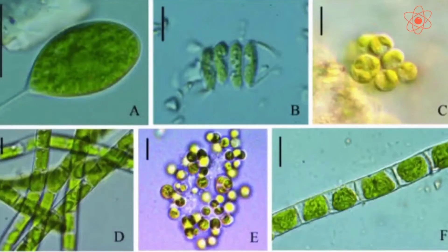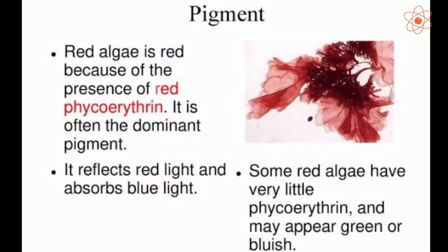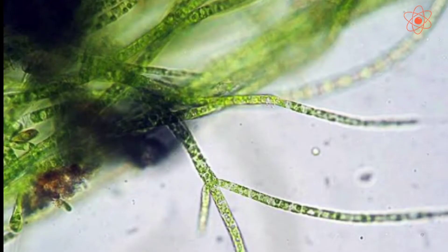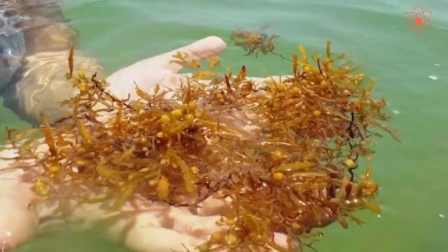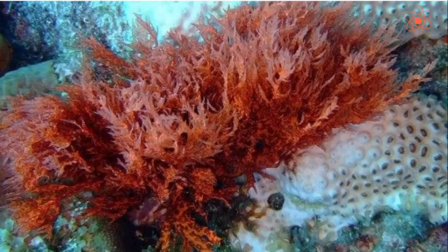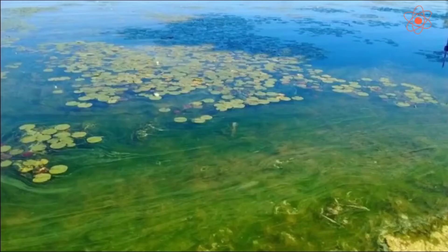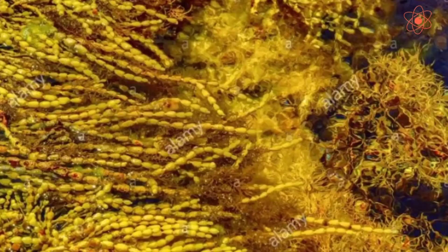Apart from the green pigment, algae also have other colored pigments. Based on the pigments present, they are classified as Green Algae, Brown Algae, Red Algae, Blue-Green Algae, or Golden Brown Algae.